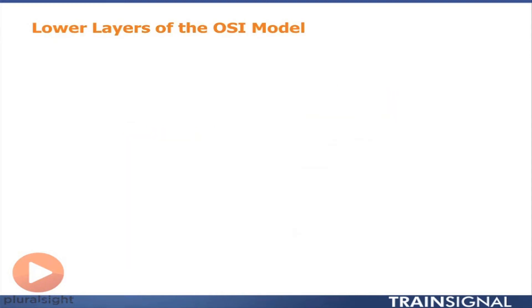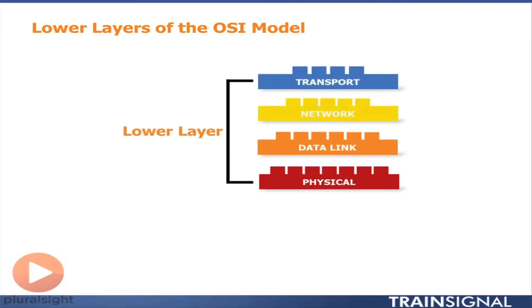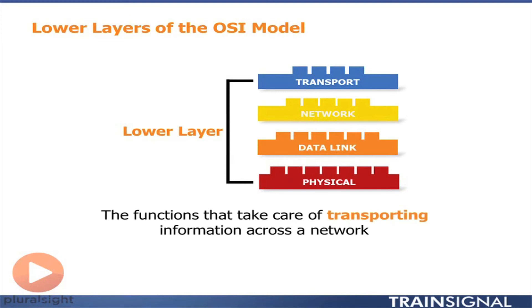I'm betting you've already guessed that below the upper layers are found the lower layers. And the lower layer of the OSI model is where the transport, network, data link, and physical layers find themselves. The lower layer takes care of all the functions that transport information from one application on one device to another application on another device across a network. These are the layers where network engineers or IT troubleshooting pros will find themselves focusing most of their efforts.